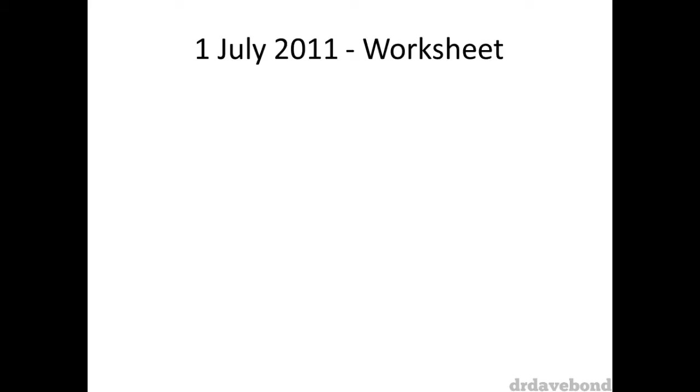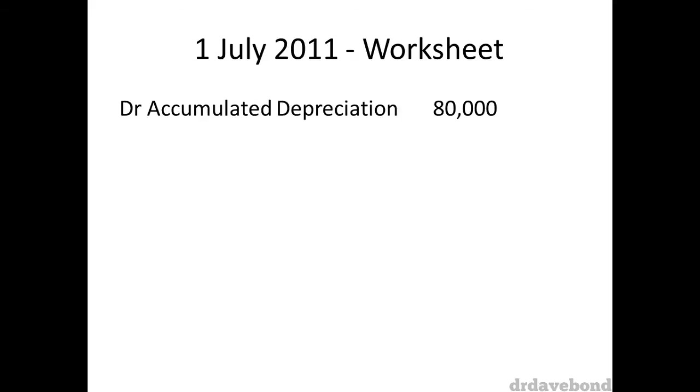We are going to be looking only at the entries in the worksheet in relation to this equipment. As it is undervalued, we need to make a fair value adjustment. On the date of the acquisition, the entries to record the fair value adjustment would be as follows. Debit accumulated depreciation $80,000 and credit equipment $80,000. This removes the accumulated depreciation account and reduces the equipment account to its carrying value, making the accounts easier to work with.